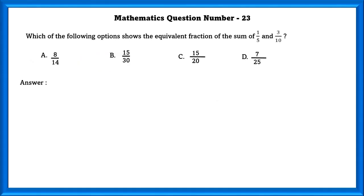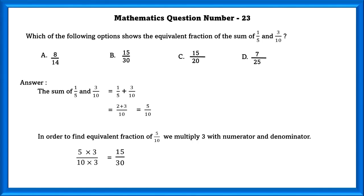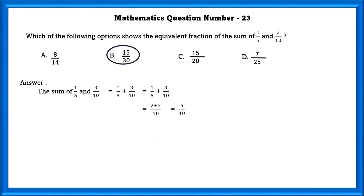Mathematics question number 23. Which of the following options shows the equivalent fraction of the sum of 1 by 5 and 3 by 10? The sum of 1 by 5 and 3 by 10 taking 10 as the LCM would be 5 by 10. In order to find the equivalent fraction of 5 by 10, we have to multiply 3 with numerator and denominator. If we do that, we will get 15 by 30. Another way that we can do this is we can reduce 5 by 10 as 1 by 2. And in option 15 by 30, it can also be reduced as 1 by 2.